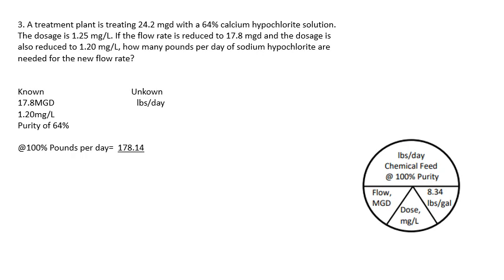But remember, this is at 100% purity. To solve for purity, we divide because we're solving for the amount above 100%. Divide by 64% as a decimal: 178.14 pounds per day divided by 0.64 gives you 278.3 pounds per day of the 64% calcium hypochlorite solution.